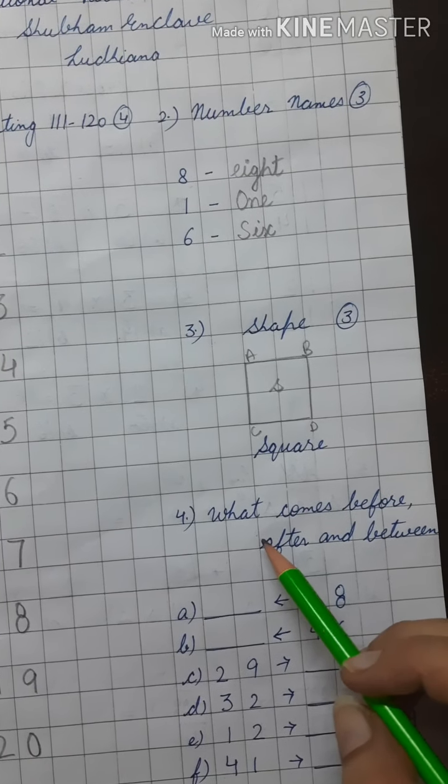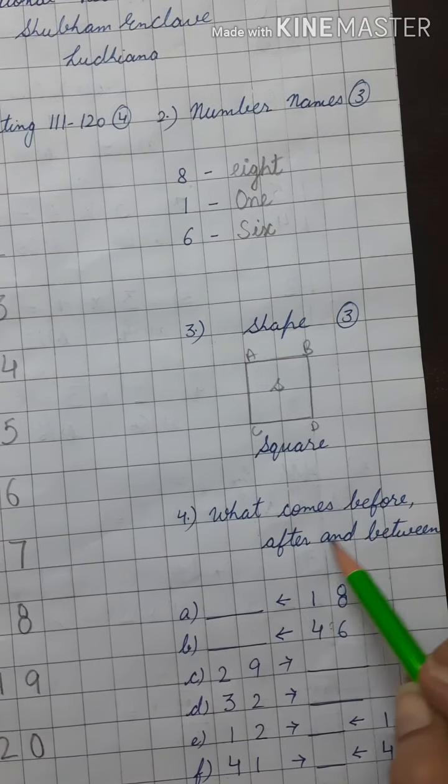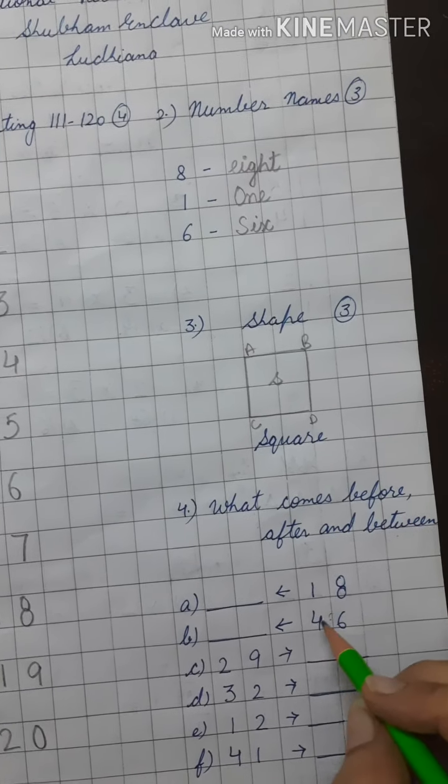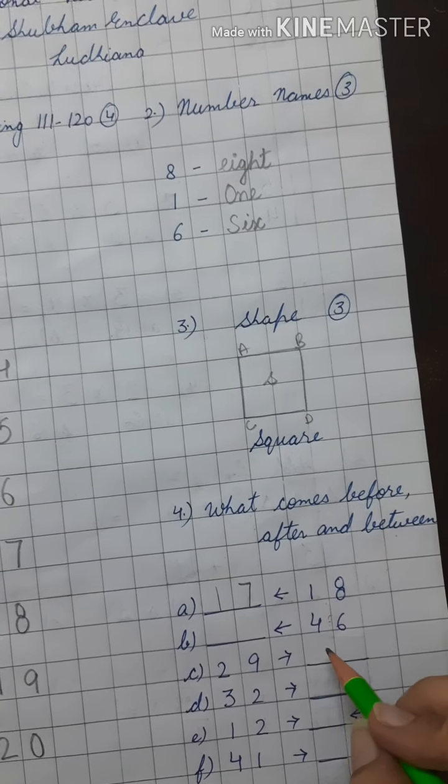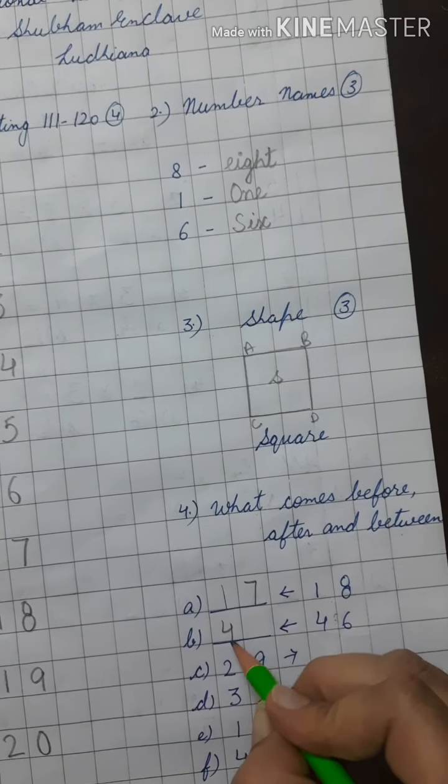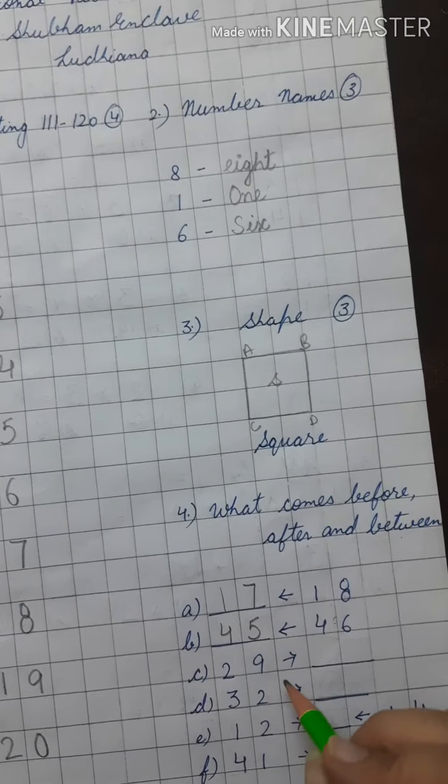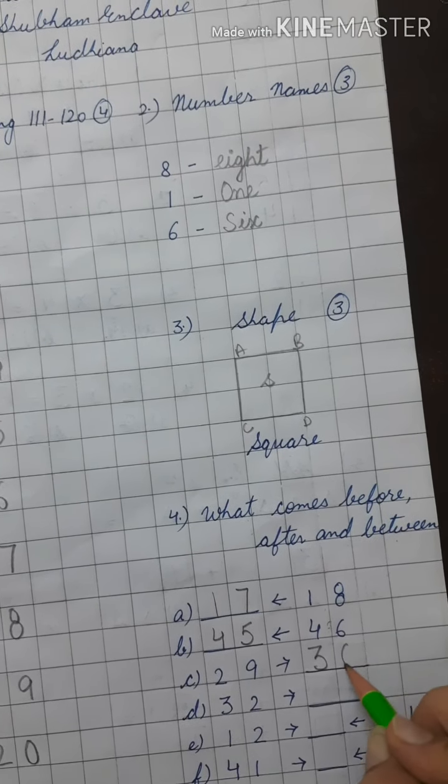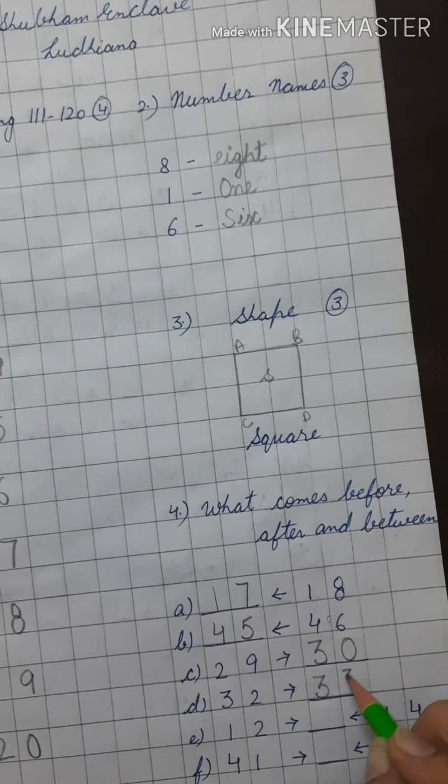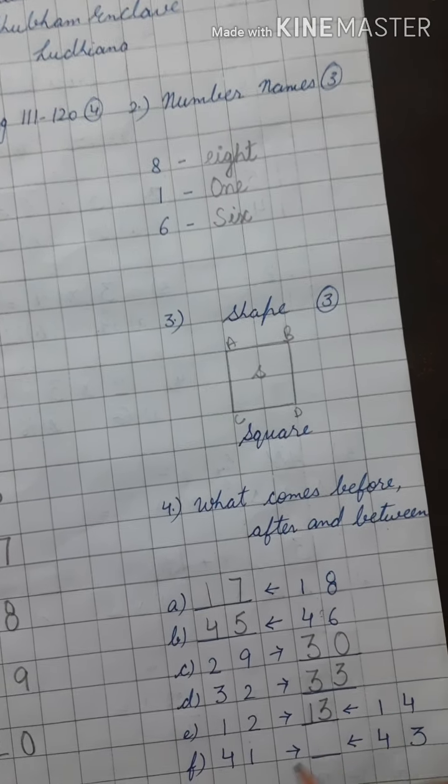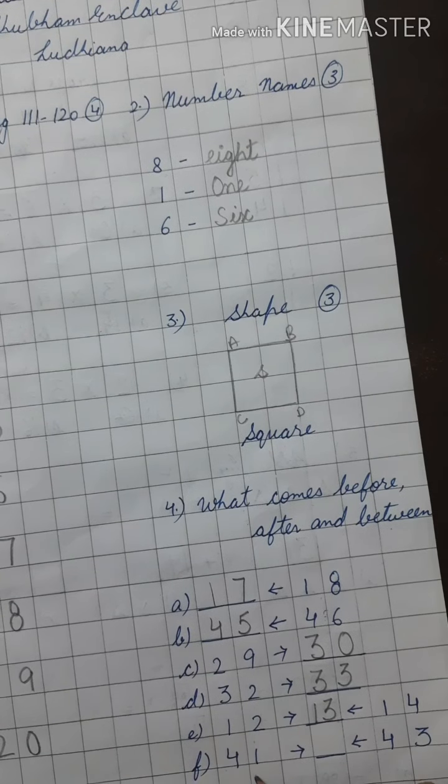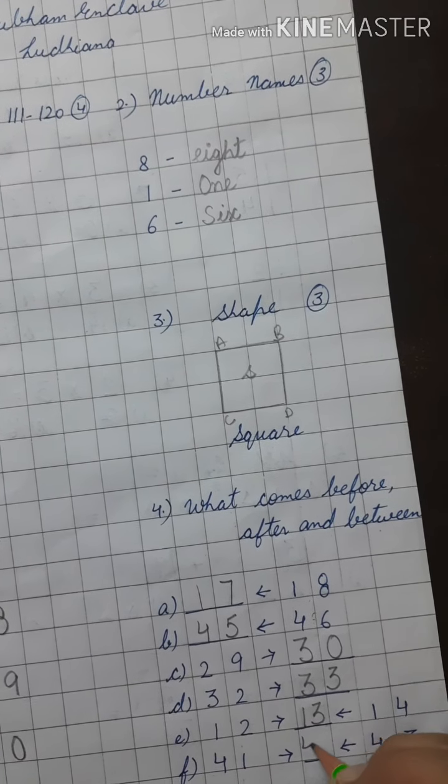In next question, you have to attempt the what comes before, after and between. What comes before 18? 17. 46, 45. 29, 30. 32, 33. 12, 13, 14. What comes between 41 and 43? 42.